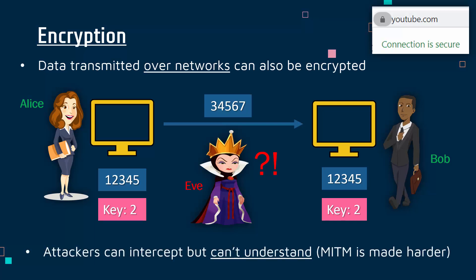Just like with data at rest, attackers can still steal or intercept messages over networks — but crucially, they can't read or understand the message because it's all scrambled up. This means man-in-the-middle attacks are made much harder, because it's much harder for Eve to change the message. Some encryption is quite weak and can be subtly changed, but this whole process is made much harder with encryption. Anything sent over a public network must be encrypted in order to be secure.